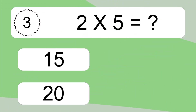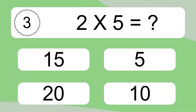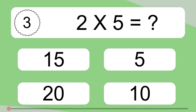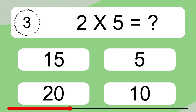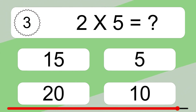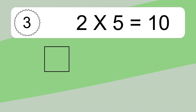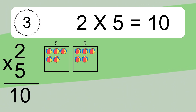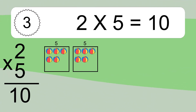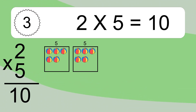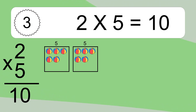Two times five equals what? Two times five equals ten. We have two boxes, and each box has five colorful balls inside. If you count all the balls in all the boxes together, you will have two times five balls. This equals ten balls.